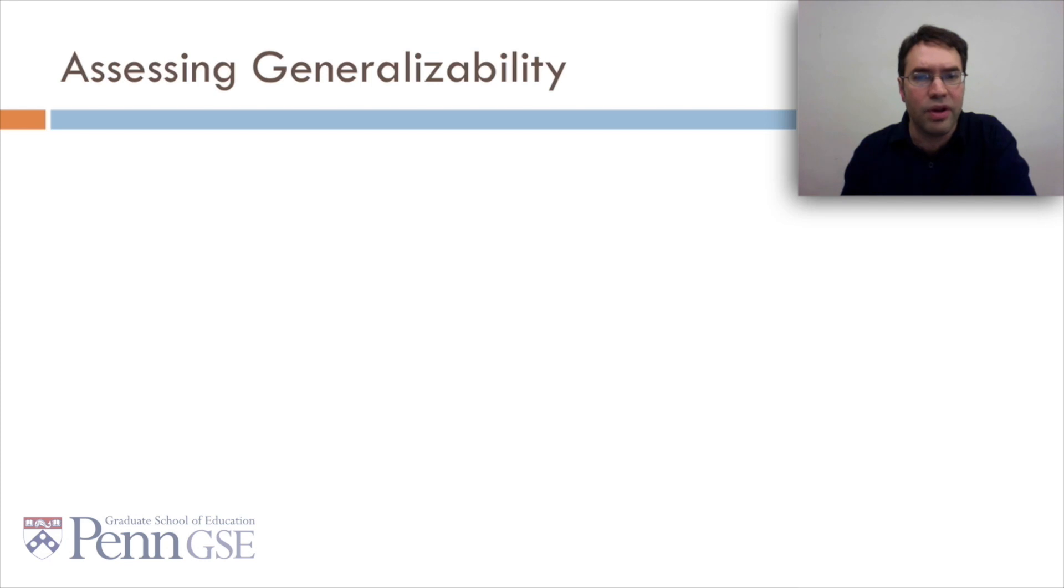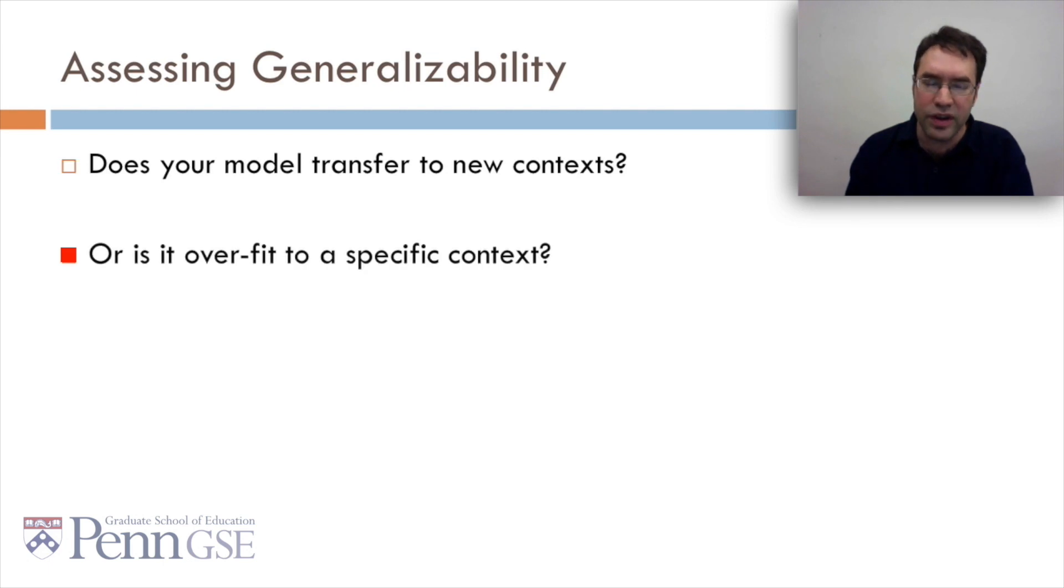To assess generalizability, you can ask, does your model transfer to new contexts? Or is it overfit to a specific context? The way I like to think about controlling overfit is in terms of assessing generalizability. Does your model transfer to new contexts? Or is it overfit to a specific context, whatever that context is?